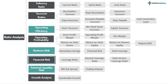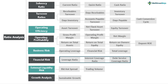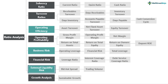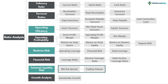Next we have business risk and financial risk. We try to understand whether the company has taken on debt and how that debt affects the income statement. There are different ratios like interest coverage ratios, leverage ratios, and debt service coverage ratios — we'll discuss these in more detail. External liquidity risk is how liquid the stock is when trading in the stock market. There's the bid-ask spread, which helps us understand stock liquidity, and trading volume — how many shares are bought or sold on a daily basis.